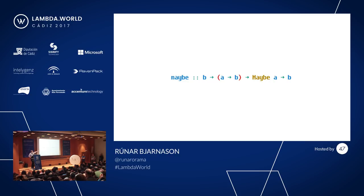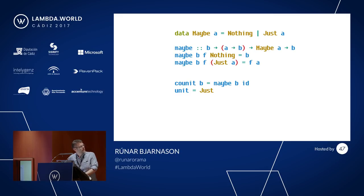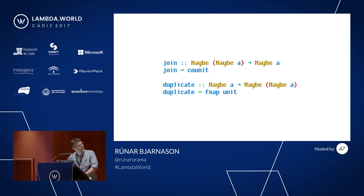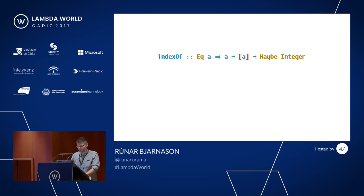Our unit is just the constructor, and our co-unit is maybe of the identity. Continuing to turn the crank gives us the Maybe monad: we get a join which is just our co-unit. We also get a Maybe comonad, though it's a comonad not in Haskell types and functions, but in the category of pointed types.